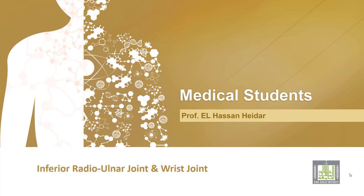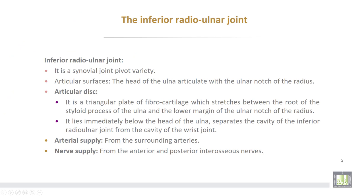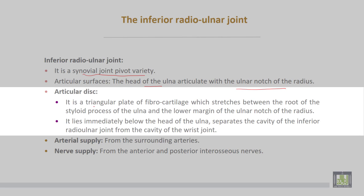The inferior radio-ulnar joint is a synovial joint of pivot variety. The articular surface: the head of the ulna articulates with the ulnar notch of the radius. The articular disc is a triangular plate of fibrocartilage which stretches between the root of the styloid process of the ulna and the lower margin of the ulnar notch of the radius. It lies immediately below the head of the ulna, separating the cavity of the inferior radio-ulnar joint from the wrist joint.